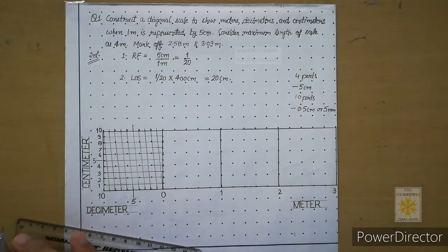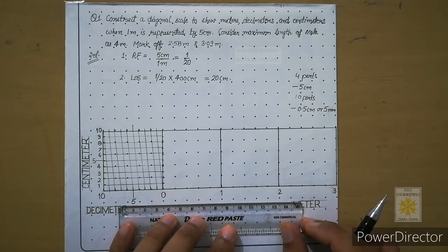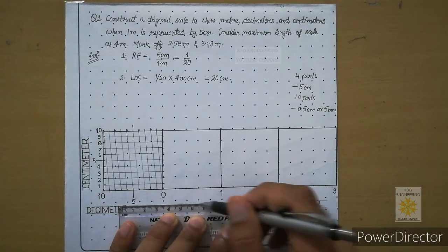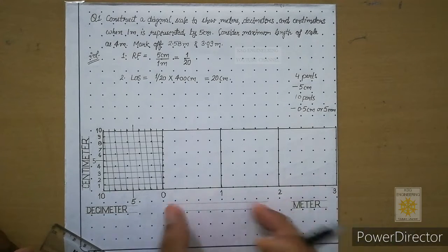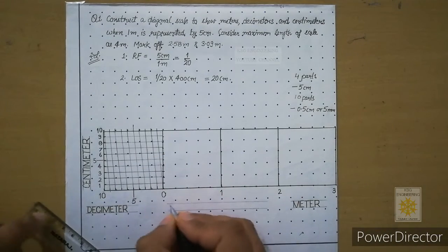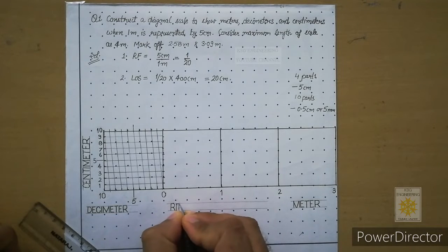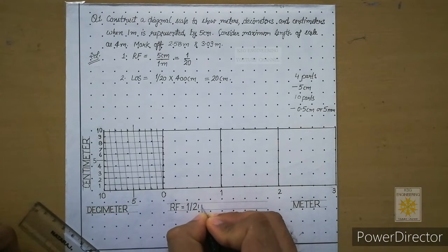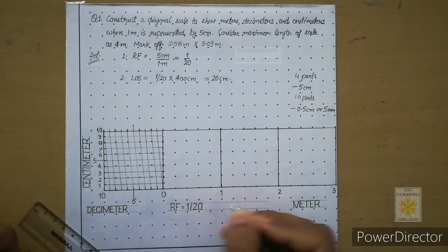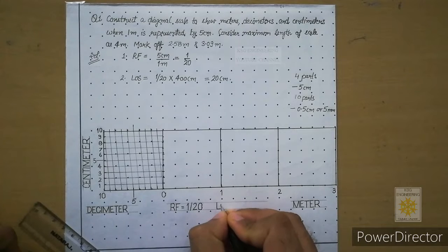Now we have to write the LOS and RF of the scale. Draw two guidelines. All units are placed in line. Over here mention the RF in gothic style — RF is 1 by 20 for this question, so label it as 1/20. Then leave some gap and mention its LOS — LOS is 20 centimeters.